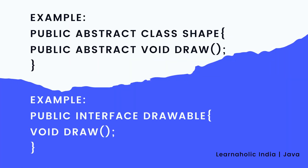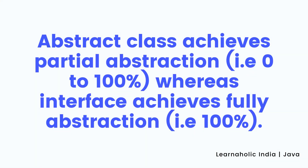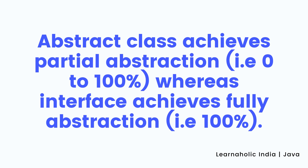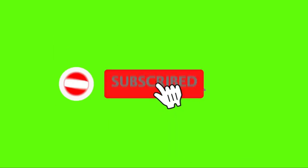The last difference is the example — both examples of abstract class and interface are shown. After studying all these points, we can simply say that abstract class achieves partial abstraction, that is 0 to 100%, whereas interface achieves full abstraction, that is 100%. Thank you for watching today's session.